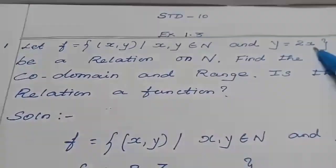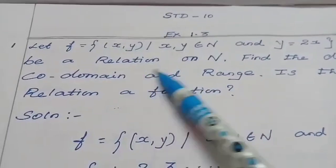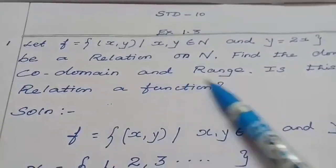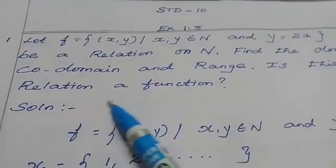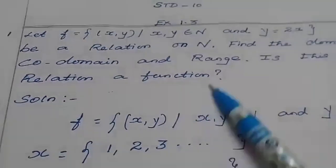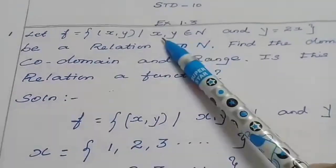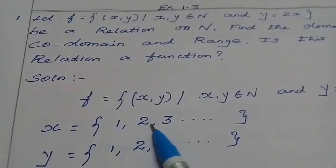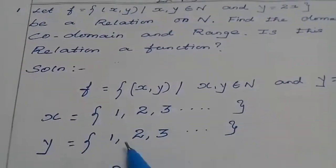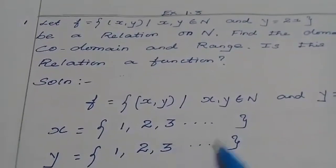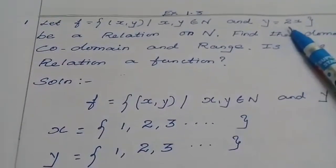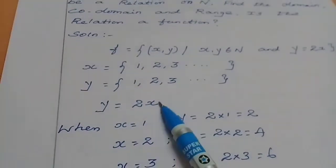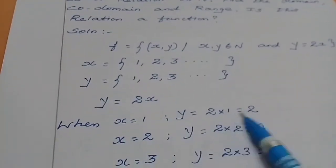Find the domain, codomain, and range — and determine whether this relation is a function or not. Here, x, y belong to natural numbers, so x starts from 1, 2, 3, and so on; y also the same. One condition is given: y = 2x. When x = 1, y = 2×1 = 2.